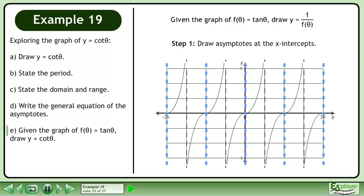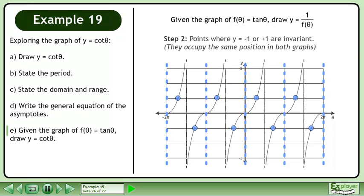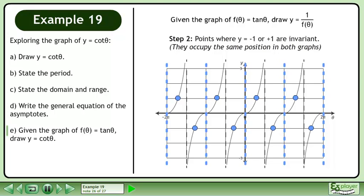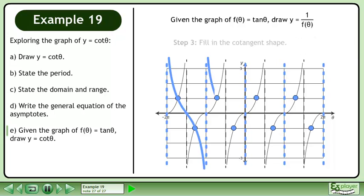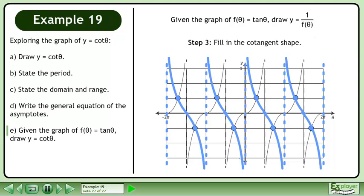In Step 1, draw asymptotes at the x-intercepts. In Step 2, points where y equals negative 1 or positive 1 are invariant. This means that they occupy the same position in both graphs. Finally, in Step 3, fill in the cotangent shape.